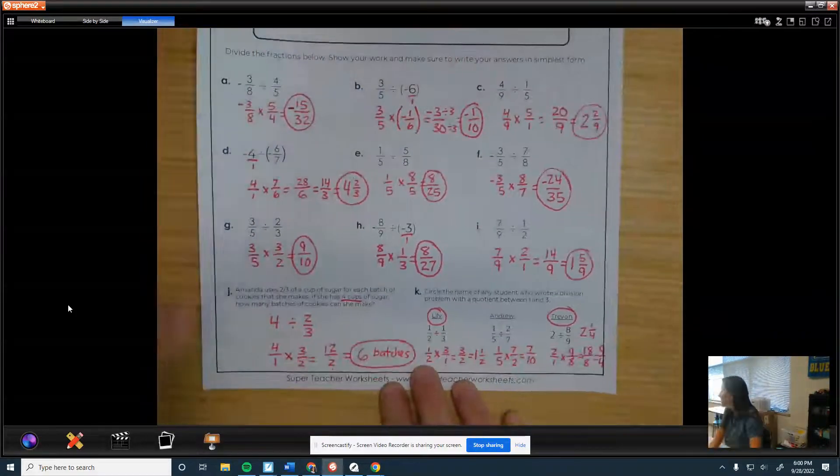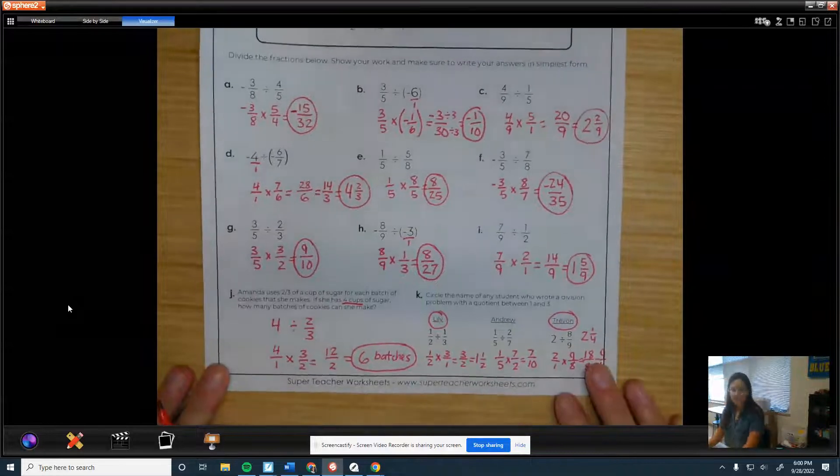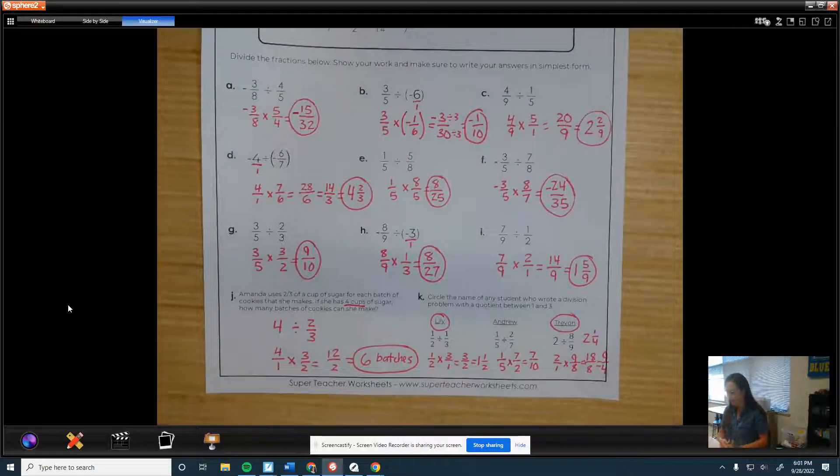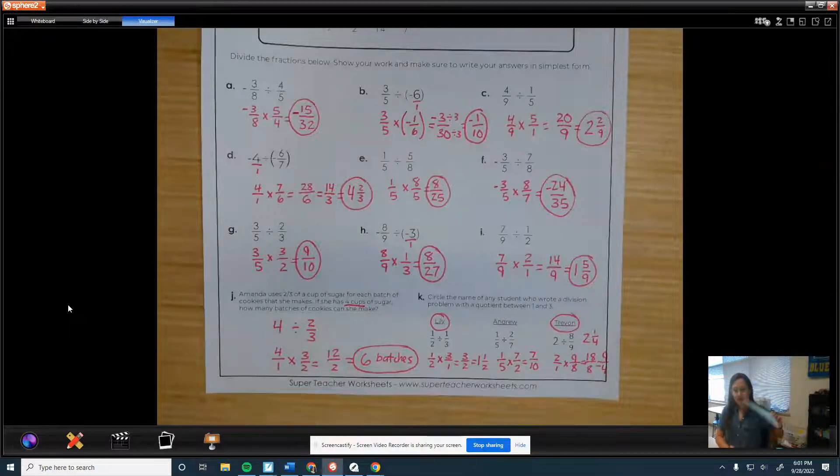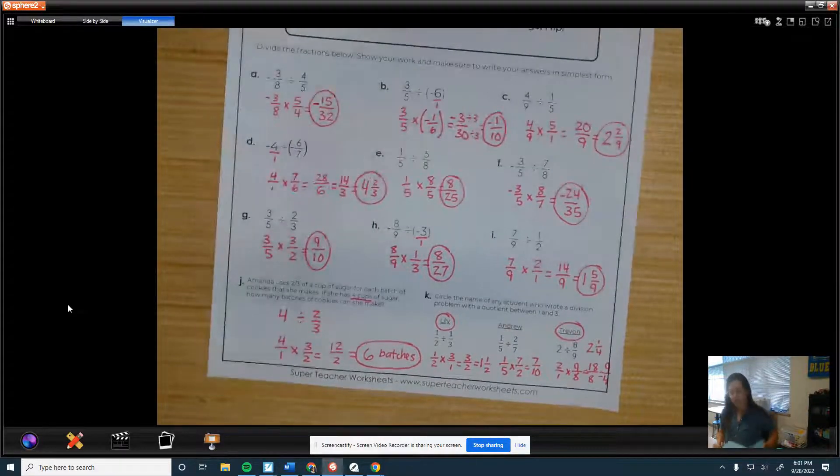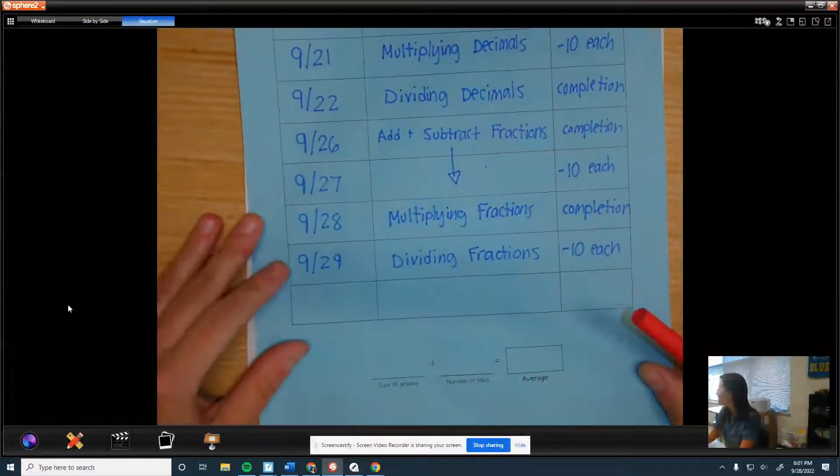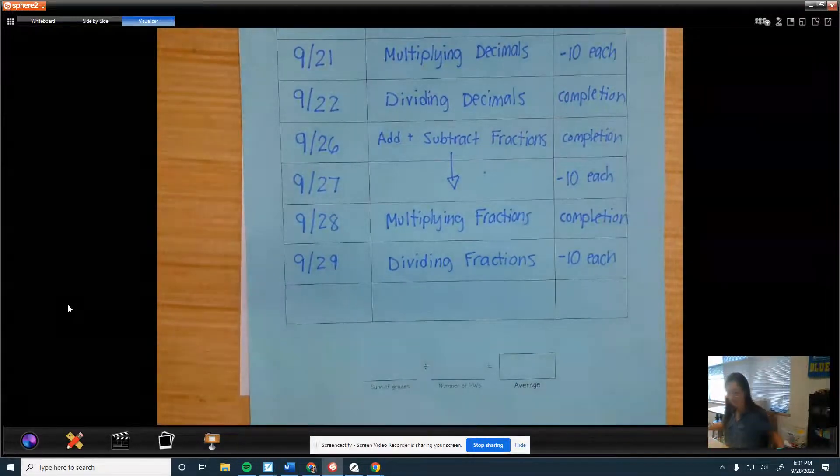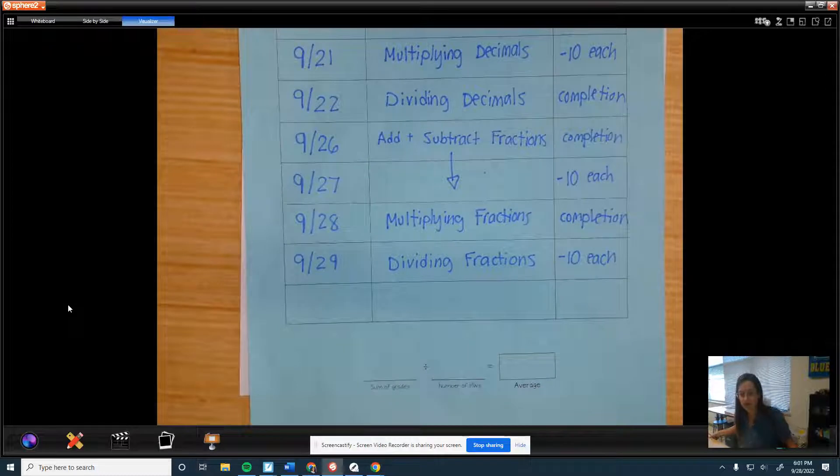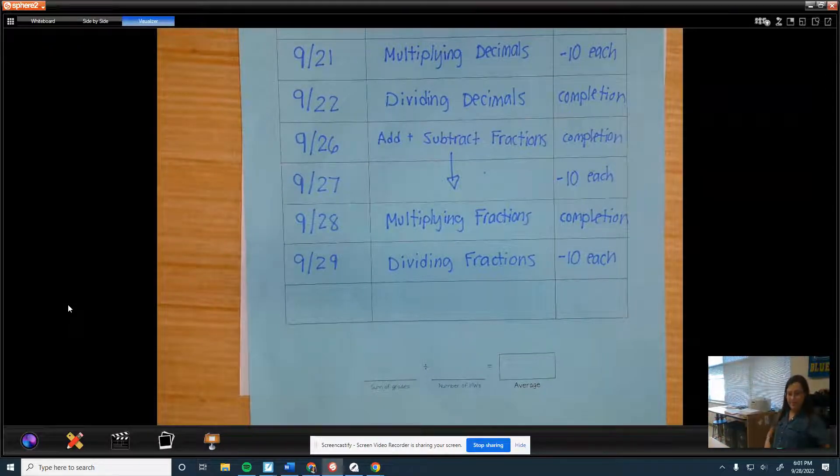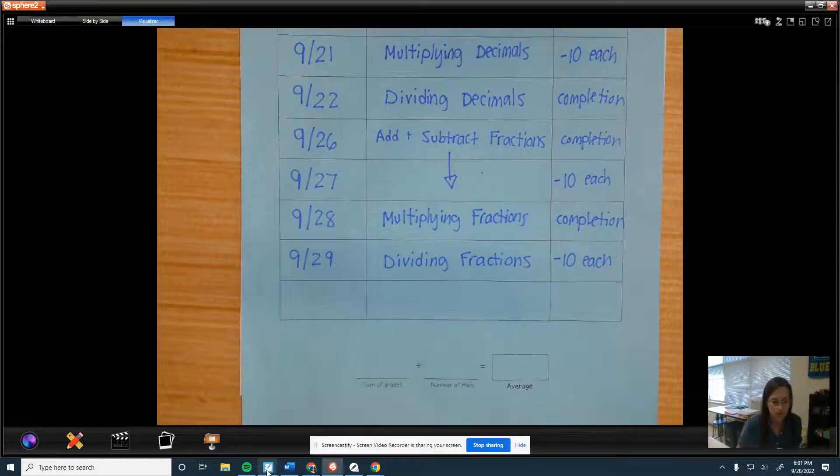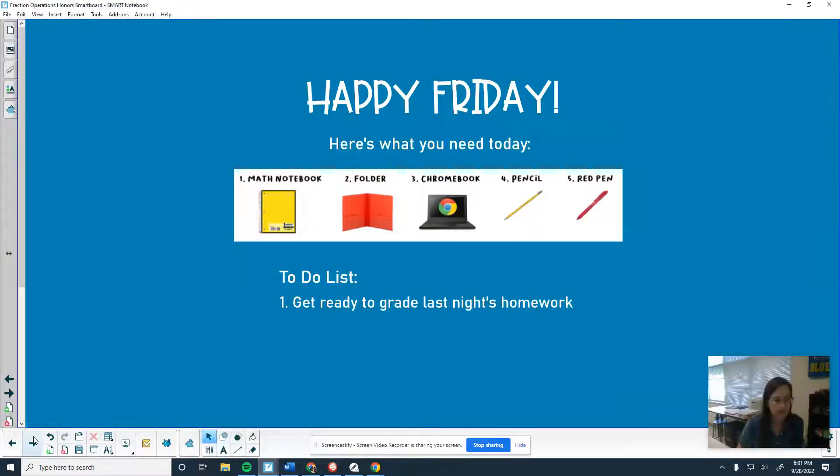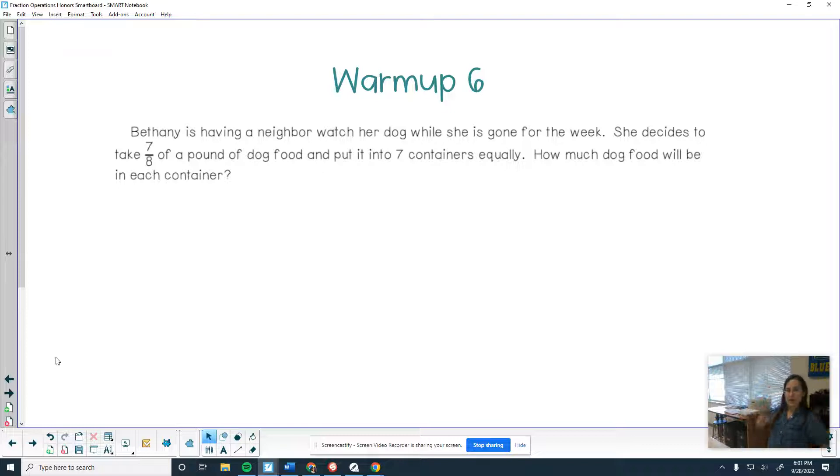Alright, so minus ten for each of those. Minus five if you messed up on the negative or simplifying, something like that. So go to your blue sheet and fill in the second to last row. And you can pause this for however long you need until you're ready for the warm-up.